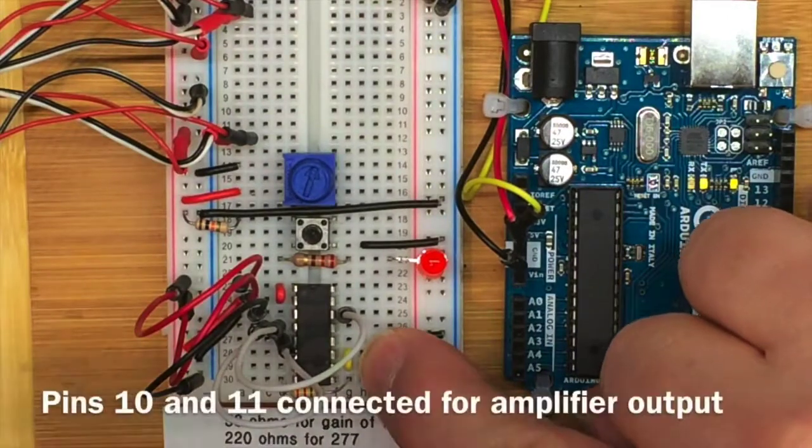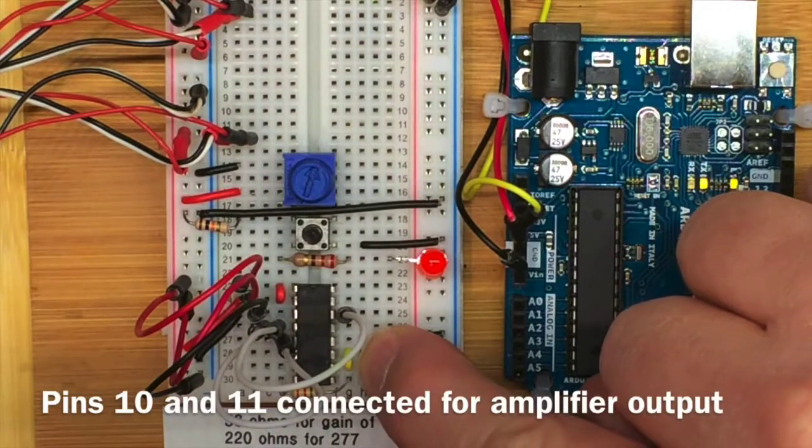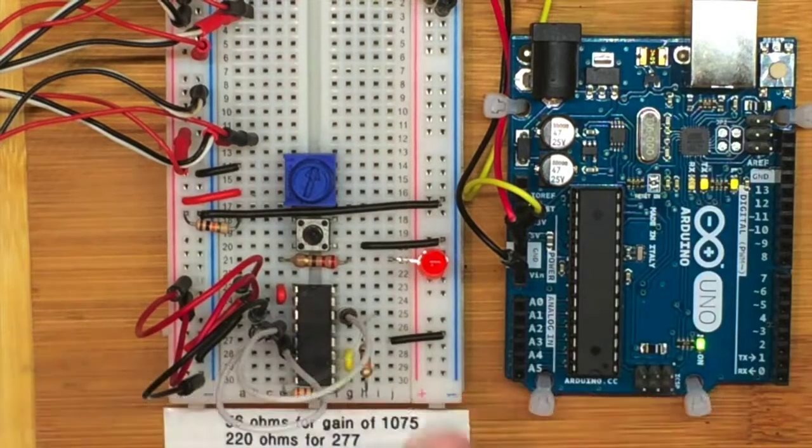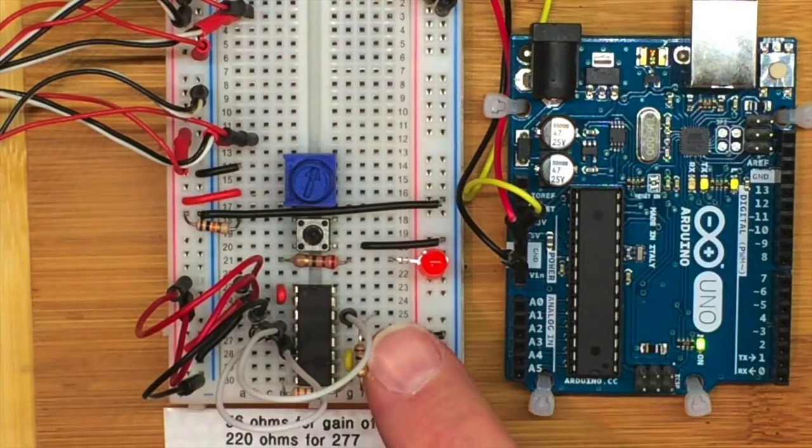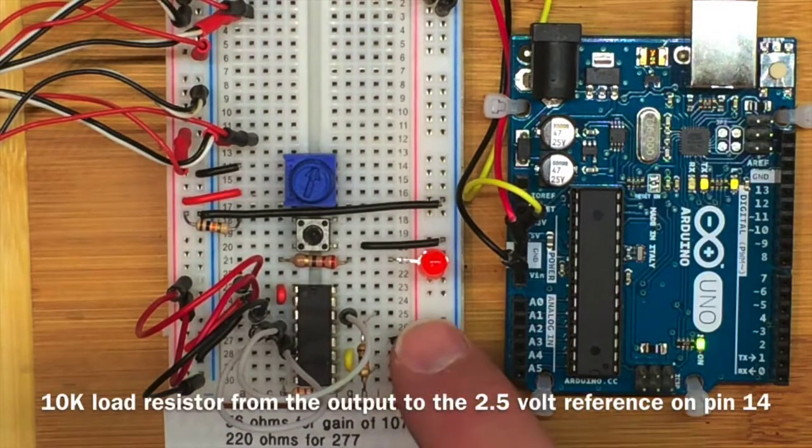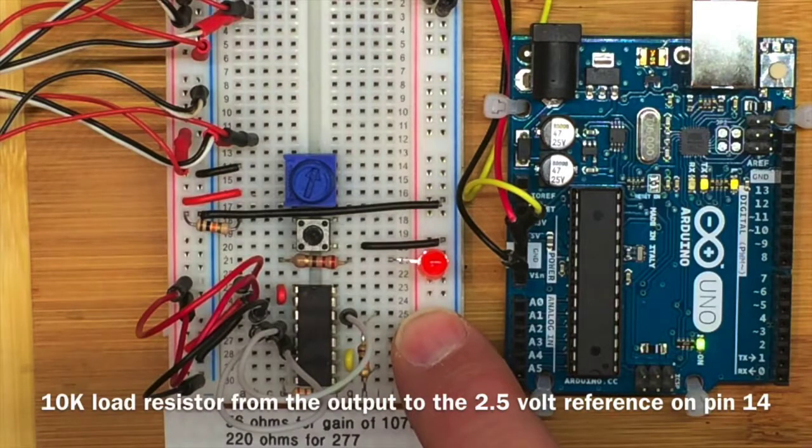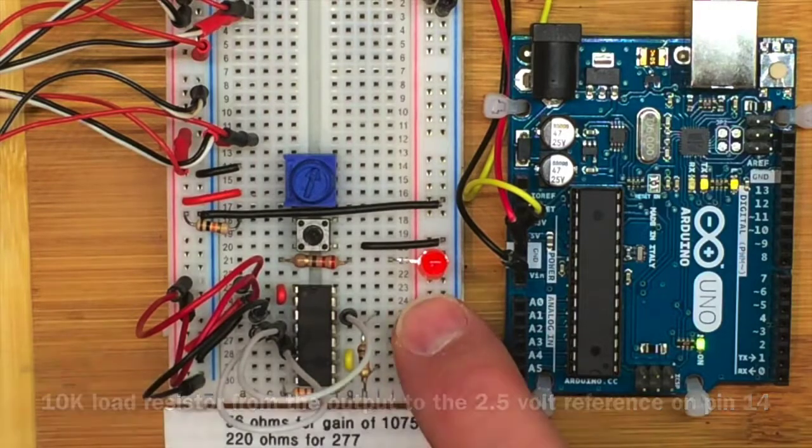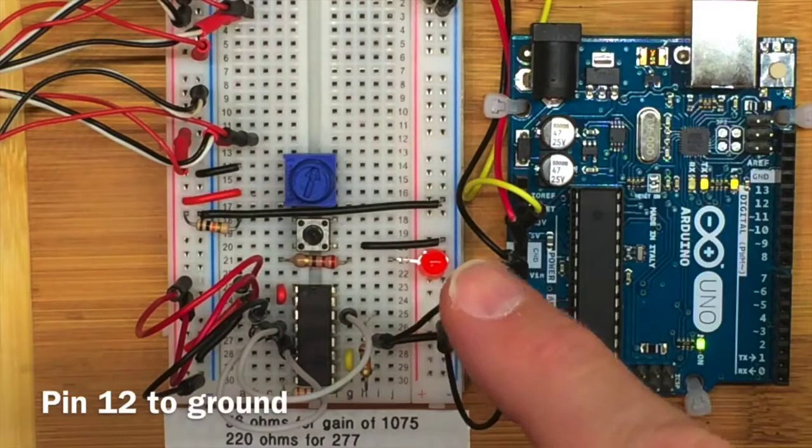As before, pin 10 and 11 are connected. They're both providing the output information. This 10k resistor provides a load resistor connecting the amplifier output to the common voltage on pin 14 here. That's the 2.5 volts. So it allows some current to flow from here over to here. This black wire connects pin 12 to ground.